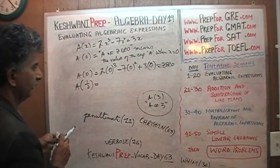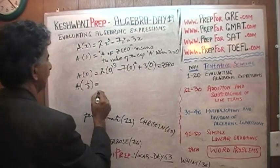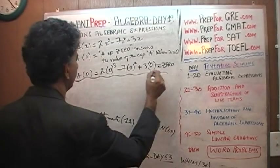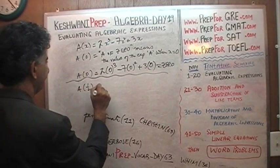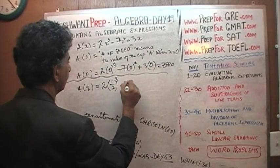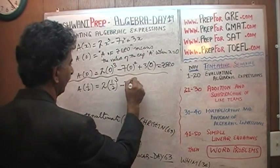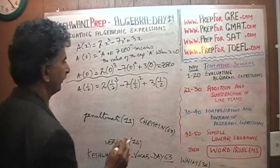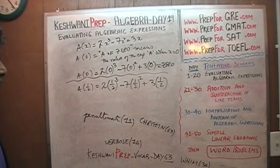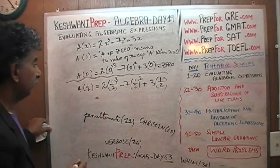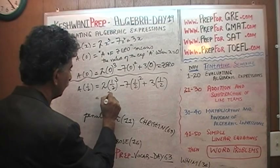We are asked to find A of one-half. So: 2 times (1/2)³ minus 7(1/2)² plus 3 times (1/2). All we have to do is show that this expression equals zero. Let's find out — it had better be zero, because otherwise we are in trouble.